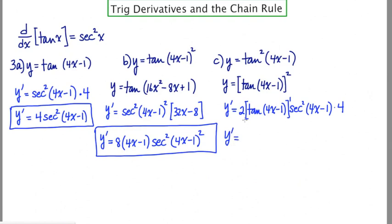The 2 in the front and the 4 in the back leave us with an 8. Then we've got tan(4x − 1), and then secant squared(4x − 1).